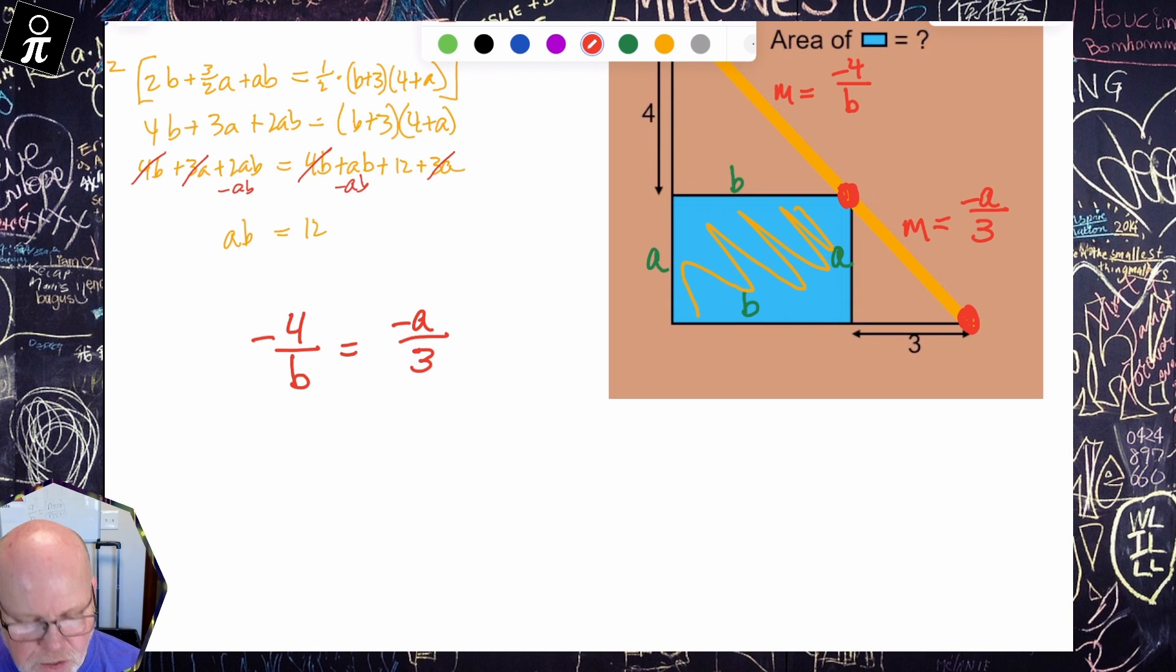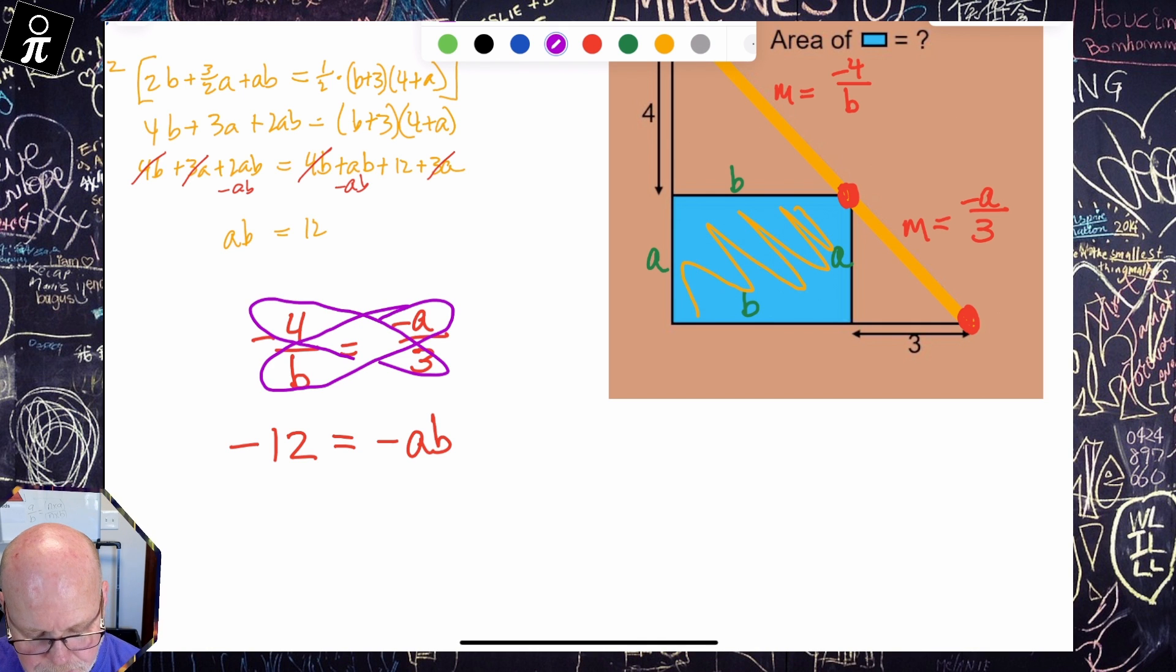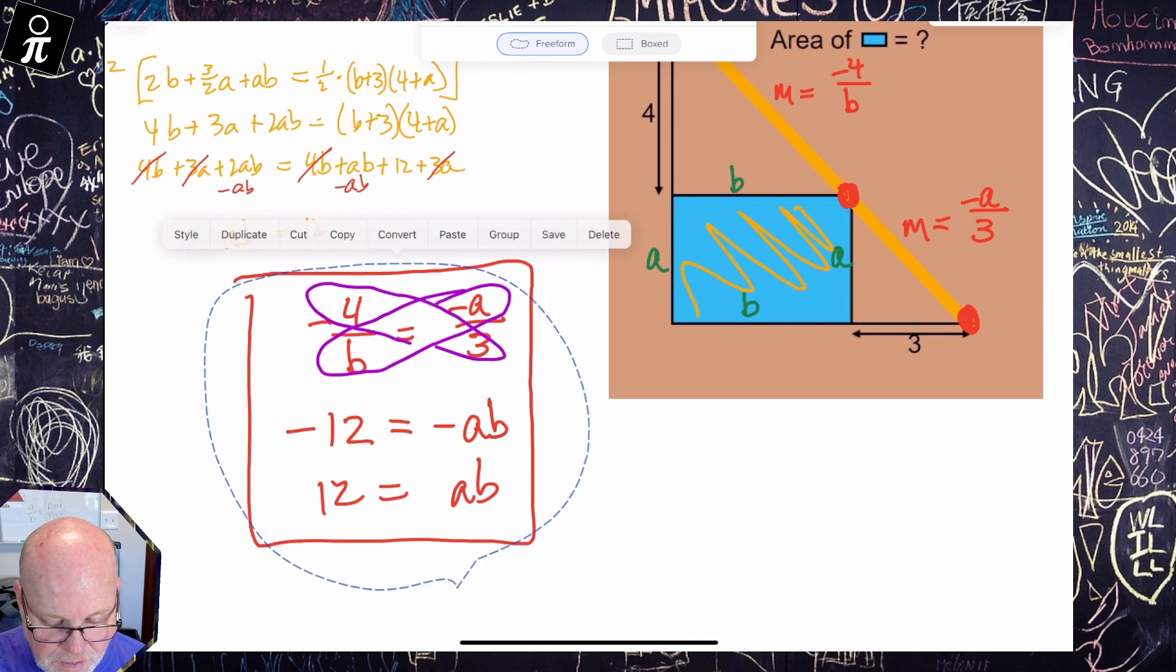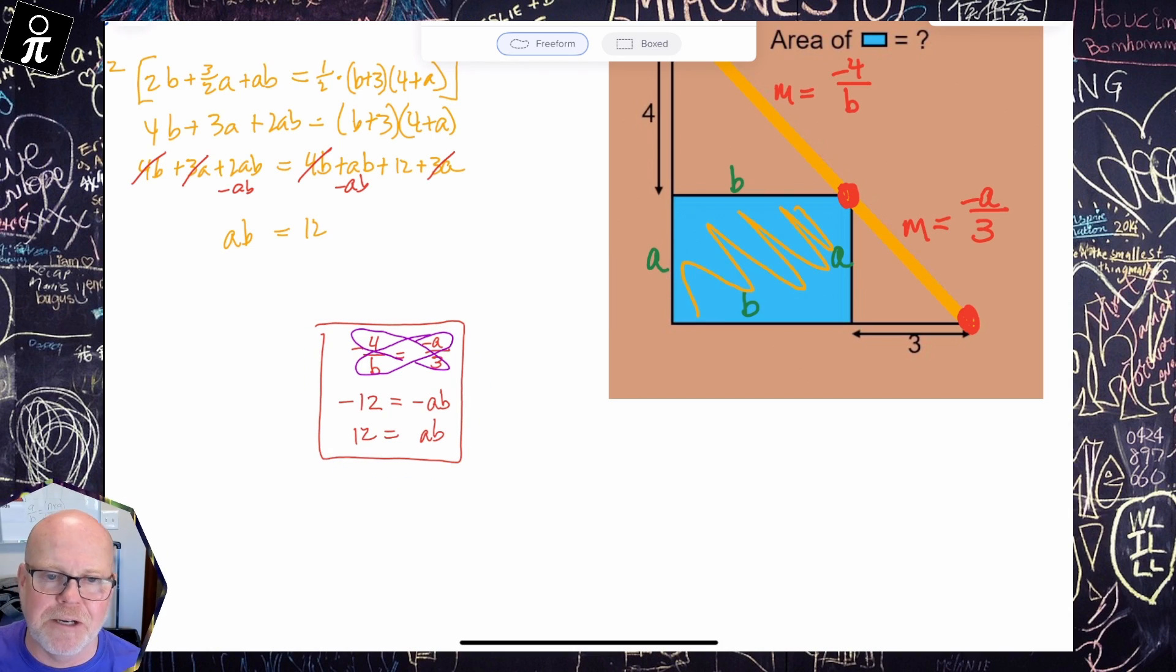Doing our little cross products kind of a thing, we end up with negative 12 is equal to negative AB. I don't know if you know about that little trick doing our little cross products there. So we get negative 12 is equal to negative AB, which means AB is equal to 12. So there is a very short, quick way of solving this problem and finding out that the area of our rectangle is 12.